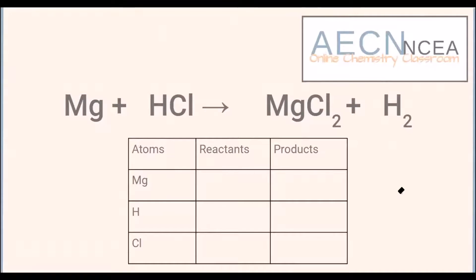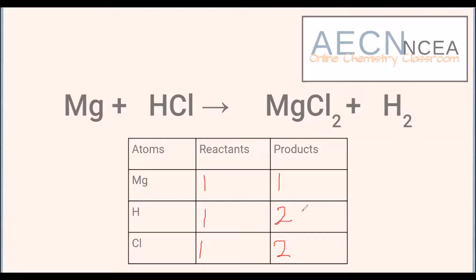Now we have a new example: magnesium reacting with hydrochloric acid — a metal and acid reaction — forming magnesium chloride and hydrogen gas. Let's count up our reactants: magnesium, hydrogen, and chloride. On the reactant side we have one magnesium, one hydrogen, one chloride. On the product side we have one magnesium, but two chlorides for every one magnesium, and we've also got two hydrogens. So two out of our three atoms are not balanced.